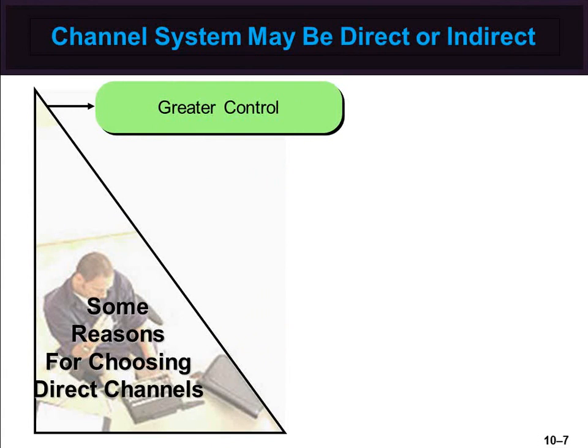Marketing channels can be direct or indirect. Direct contact with customers helps a company keep abreast of market changes. Often, this is a preferred way of handling place decisions. However, some products require the work of specialists to match producer output to user needs.